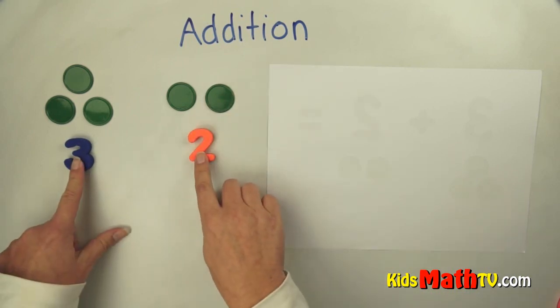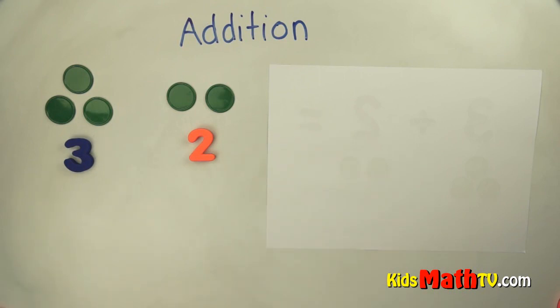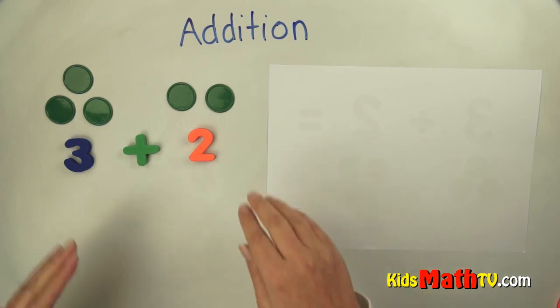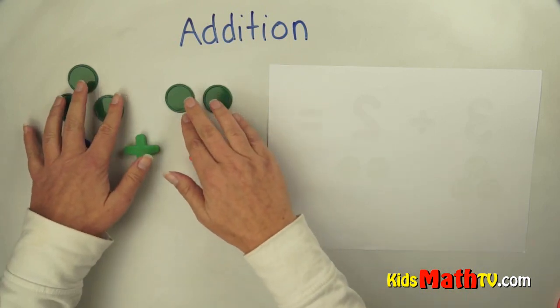So we have three and we have two. We want to add them together. This is the addition sign. This means to put them together.